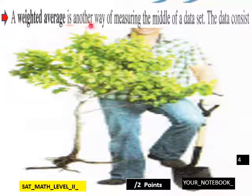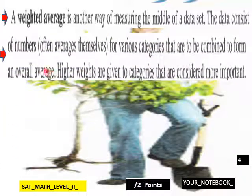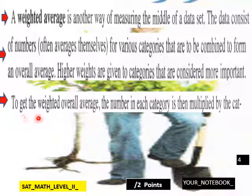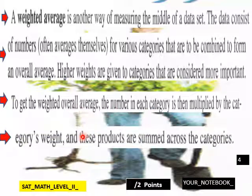A weighted average is another way of measuring the middle of a data set. The data consists of numbers, the averages themselves, for various categories that are to be combined to form an overall average. Higher weights are given to categories that are considered more important. To get the weighted overall average, the number in each category is then multiplied by the category's weight, and these products are summed across categories.